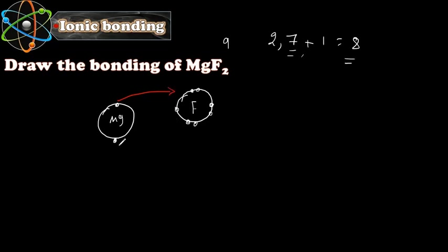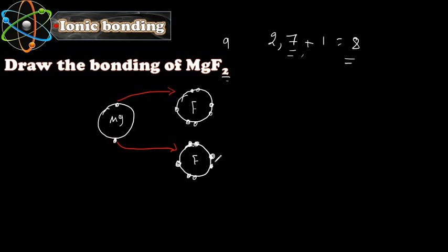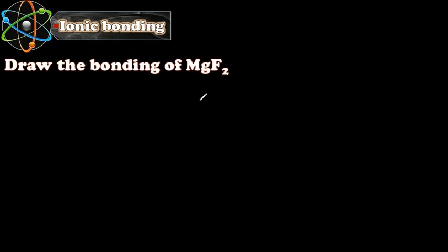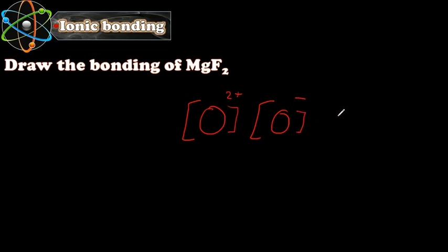The other electron from magnesium is going to go to another fluorine atom. So we have two atoms of fluorine — we draw another fluorine atom with seven valence electrons. The second electron from magnesium goes to this second fluorine atom. After bonding, magnesium lost two electrons and becomes 2+, the first fluorine gained one electron and becomes −, and the second fluorine gained one electron and also becomes −.